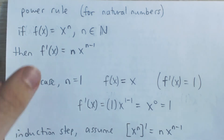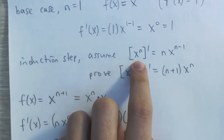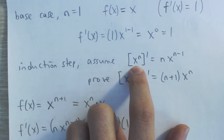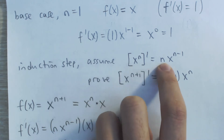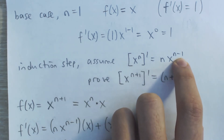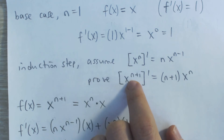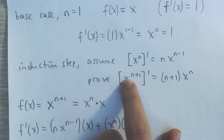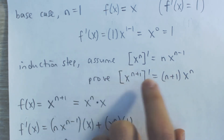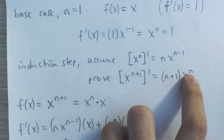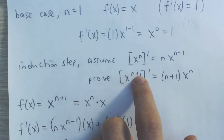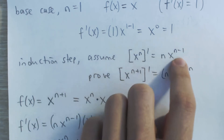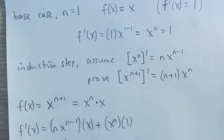Now for the induction step, we have to assume that it works for some natural number n — in other words, that the derivative of x to the n is indeed n times x to the n minus 1. And given that, we have to prove that it's true for the next natural number: the derivative of x to the n plus 1 is n plus 1 times x to the n plus 1 minus 1, which is just n. So we can use the induction hypothesis to prove what we want to prove.